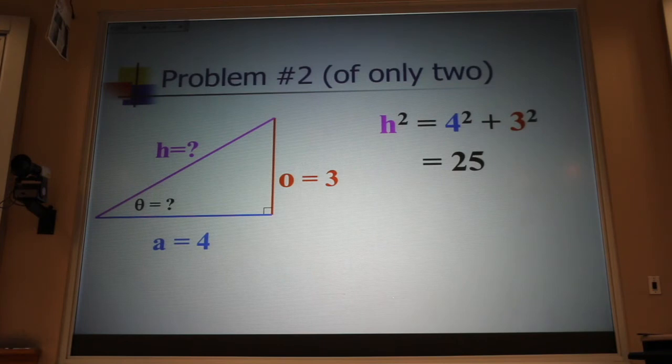h² is equal to 25. That means h is what? Plus or minus 25. Are there two answers, really? No, I'm looking for the length of the hypotenuse. Have you ever, oh yeah, that dresser has a length of minus 12 inches. That doesn't make any sense. Only one of those answers makes any physical sense. And so the answer here would be h = 5.